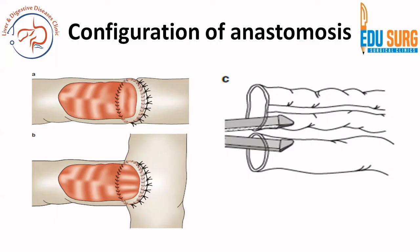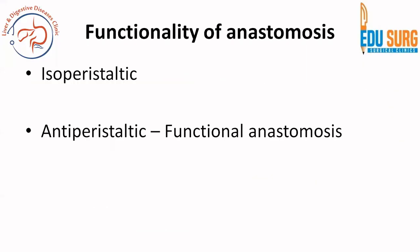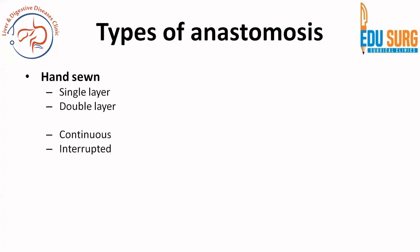Coming to the configuration of anastomosis: it can be end-to-end, end-to-side, or side-to-side anastomosis, which can be done in hand-sewn or stapled fashion. Based on functionality, the anastomosis can be isoperistaltic or anti-peristaltic. When it is anti-peristaltic it is known as a functional anastomosis — when two loops with peristalsis in the same direction are attached in a side-to-side configuration, the flow of contents is impeded due to the change in direction of peristalsis. The type of anastomosis can also be single layer or double layer, with continuous or interrupted sutures, or stapled with linear or circular staplers.